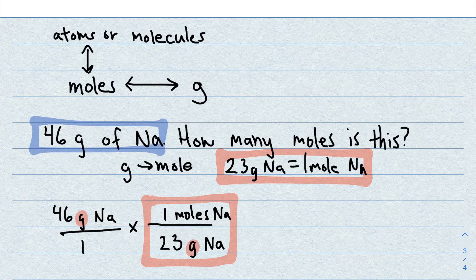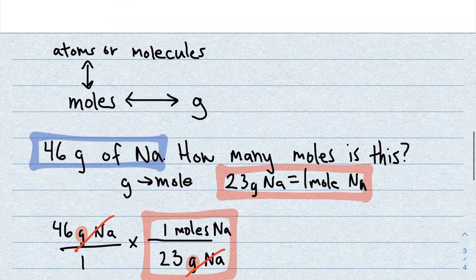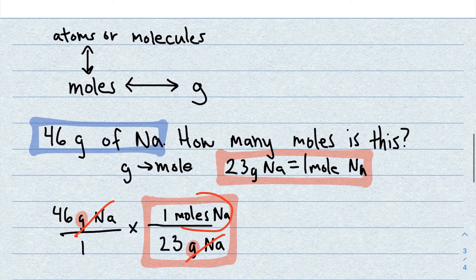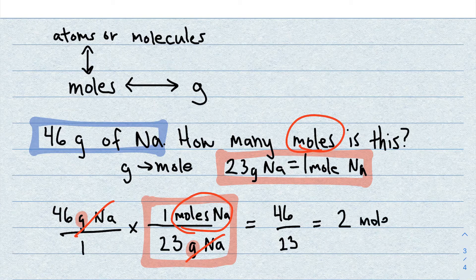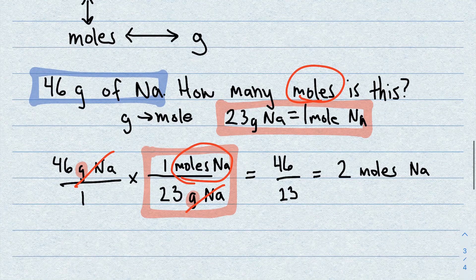We double-check — the grams cancel, leaving us with moles of sodium. Multiply across the top: 46 × 1 = 46. Multiply across the bottom: 23 × 1 = 23. Then simplify: 46 ÷ 23 = 2. The answer is 2 moles of sodium. That's how you do conversions with molar mass.